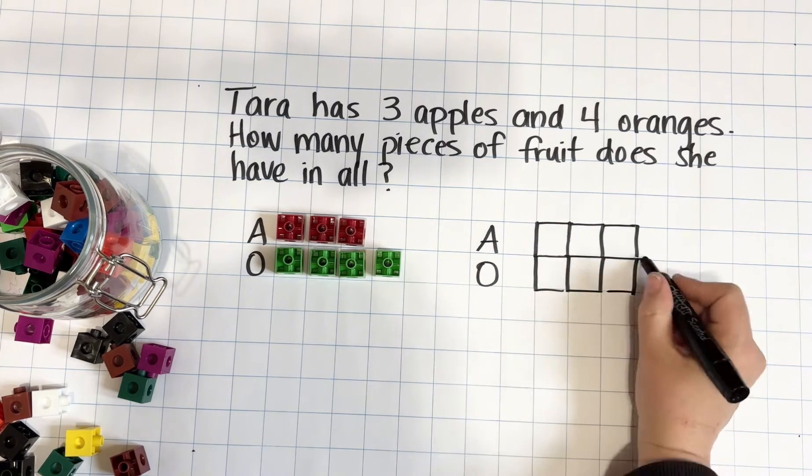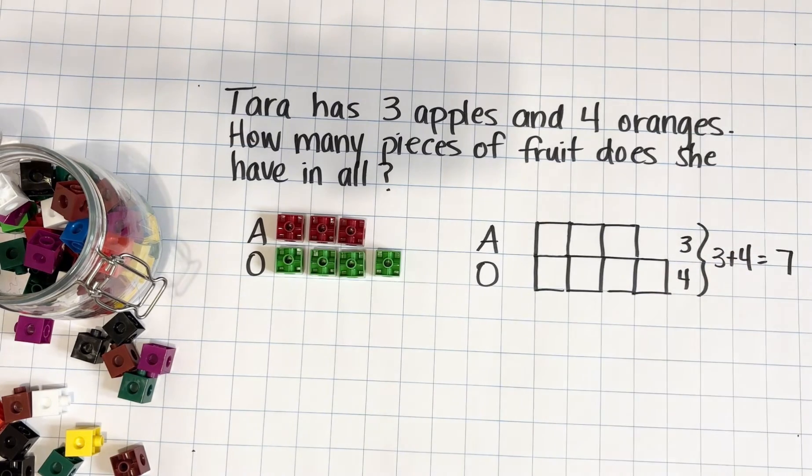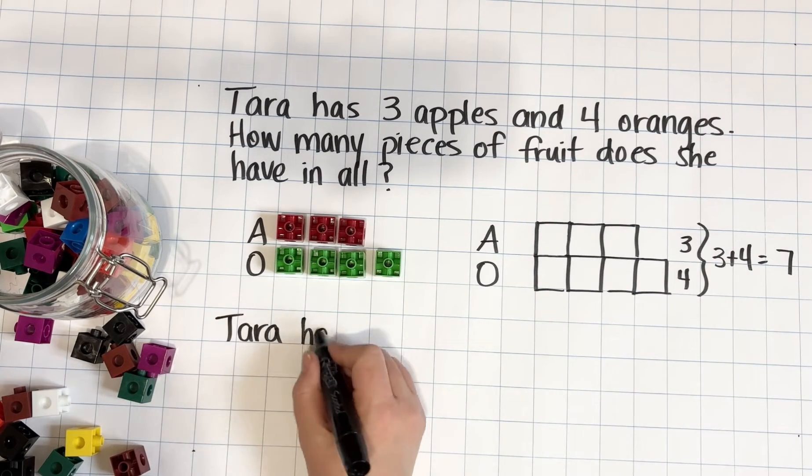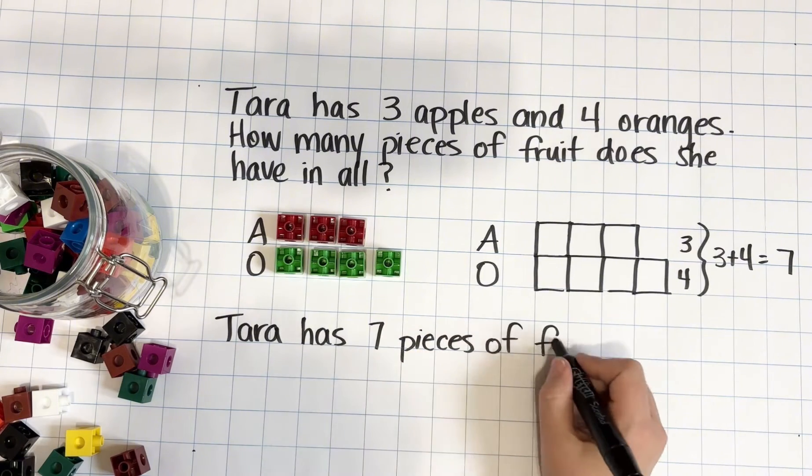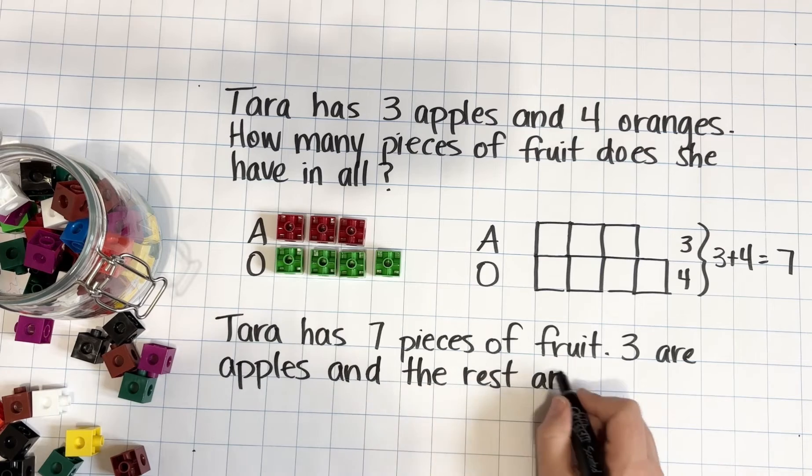So let's take a look at how this same type of problem might become a subtraction problem. This time, instead of trying to find the total pieces of fruit, we know how many pieces there are and we are only trying to find the number of oranges.